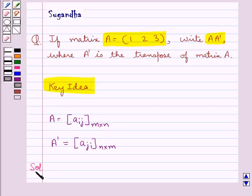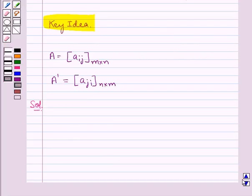Let's proceed with the solution now. We are given a matrix A equal to 1, 2, 3, elements in the row of the matrix A. This matrix A has 1 row and 3 columns and the elements of the row are 1, 2, and 3.